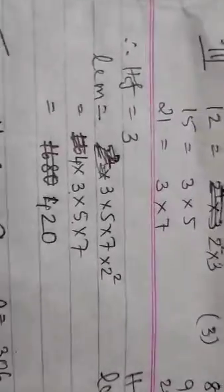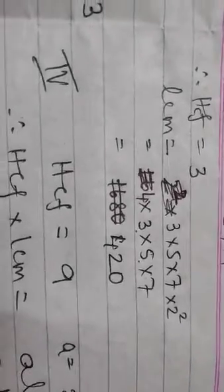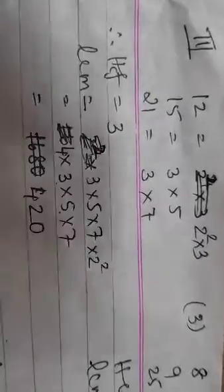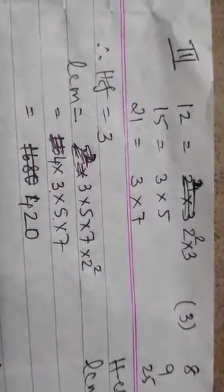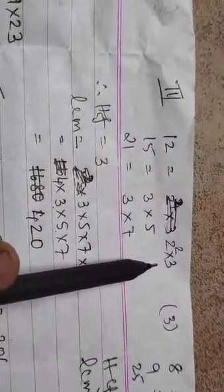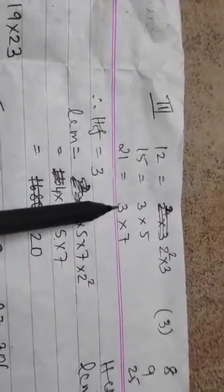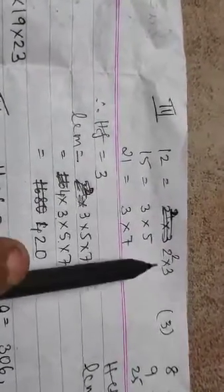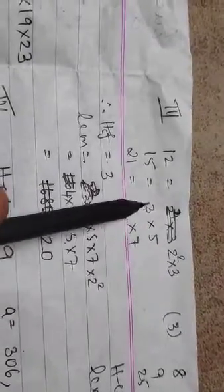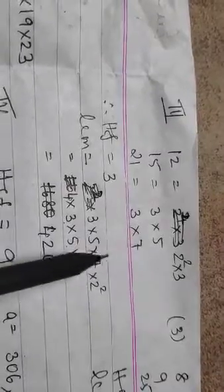The third question of the exercise says find LCM and HCF by prime factorization. Here you are not supposed to prove — why? Because there are three numbers given, and the rule is not applicable for three numbers. So: 12 = 2²×3; 15 = 3×5; 21 = 3×7. What is common among the three? 3 is common, so HCF = 3. For LCM: 3 is common so take 3, then 2², then 5, and 7. Product of 4×3×5×7 gives 420 as the LCM.